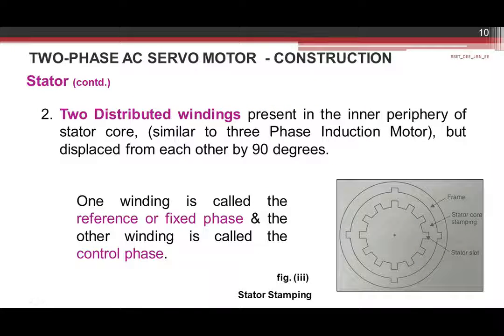The second type has a stator similar to that of a three-phase induction motor, which has a distributed winding. Being a two-phase AC servo, it has two distributed windings present in the inner periphery of the stator core, and their axes should be 90 degrees apart. The 90-degree separation is needed to produce a rotating magnetic field. One winding is called the reference or fixed phase and the other is called the control phase.